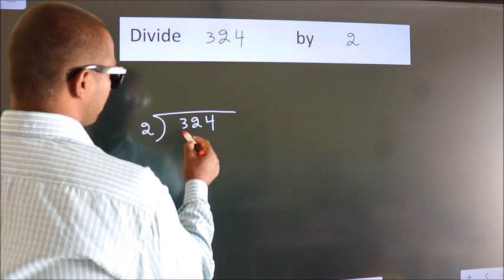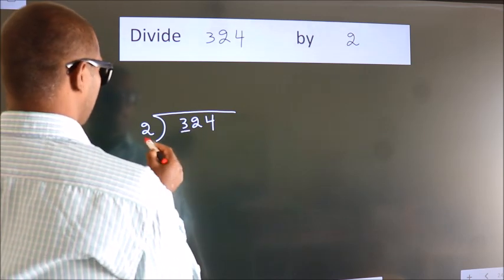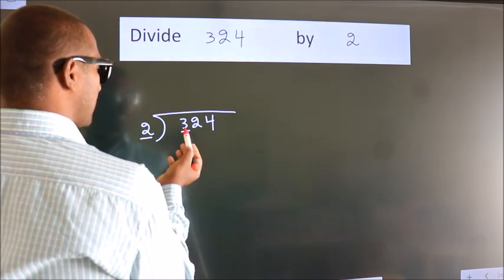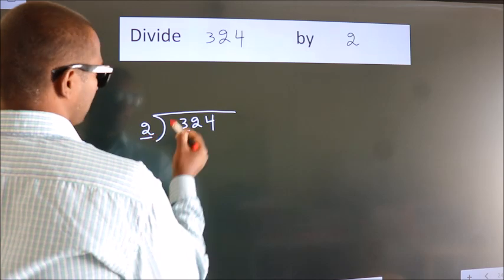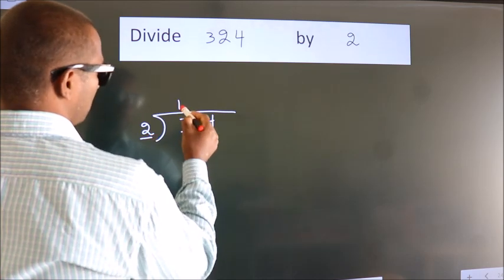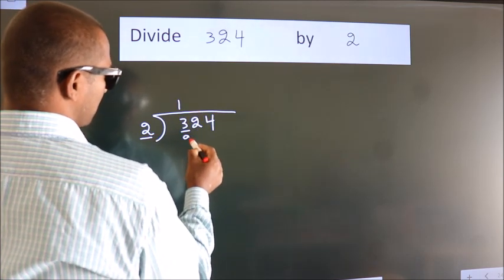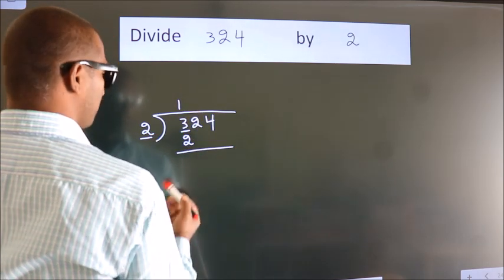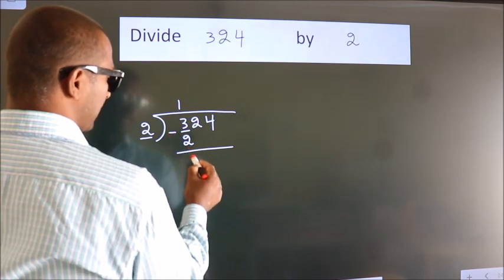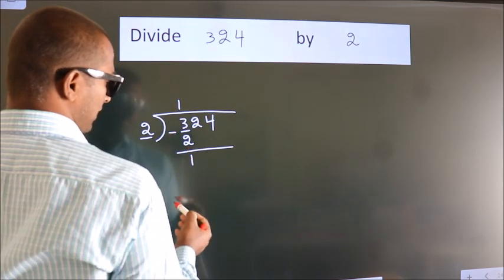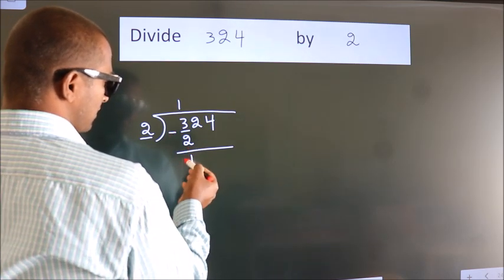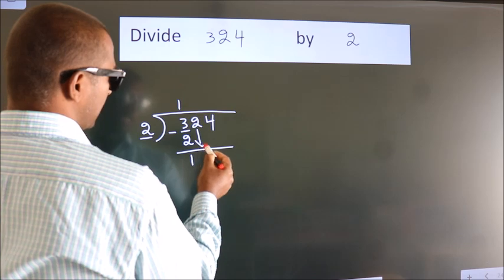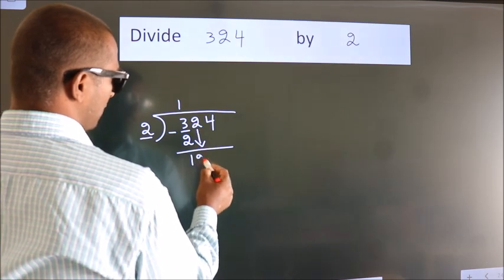Here we have 3, and here 2. A number close to 3 in the 2 times table is 2 — 1 times 2 is 2. Now we should subtract. We get 1. After this, bring down the beside number, so 2 comes down.